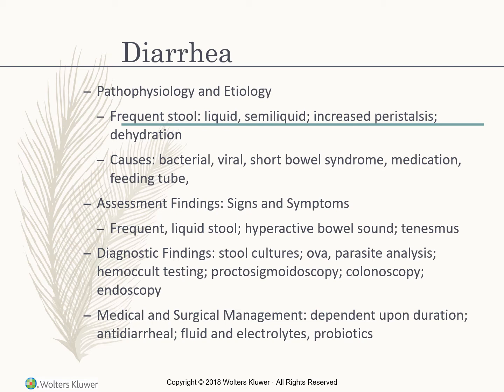Assessment findings include frequent liquid stool, hyperactive bowel sounds, and tenesmus — the urgency to have a bowel movement. Diagnostic findings include stool cultures, ova and parasites analysis, hemoccult testing, proctosigmoidoscopy, colonoscopy, and endoscopy. Management depends on duration: anti-diarrheals if prolonged, plus fluid and electrolyte replacement and probiotics.